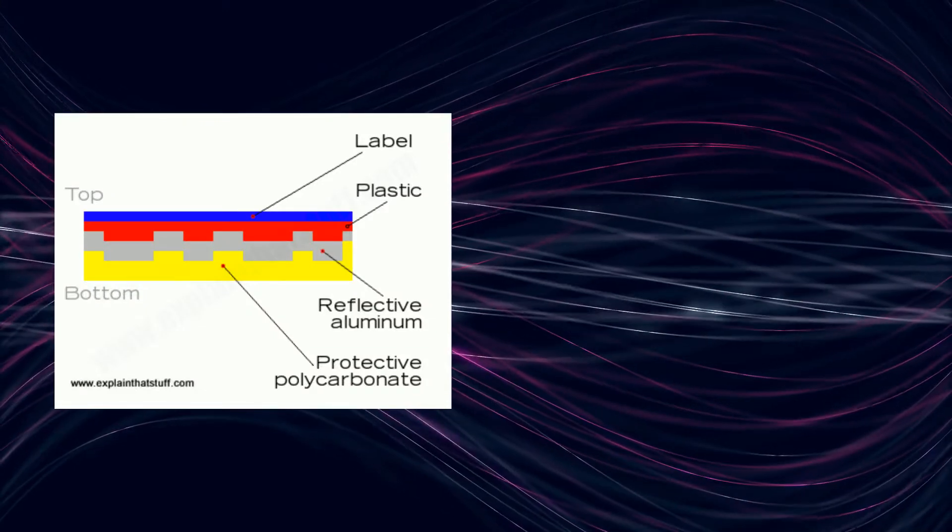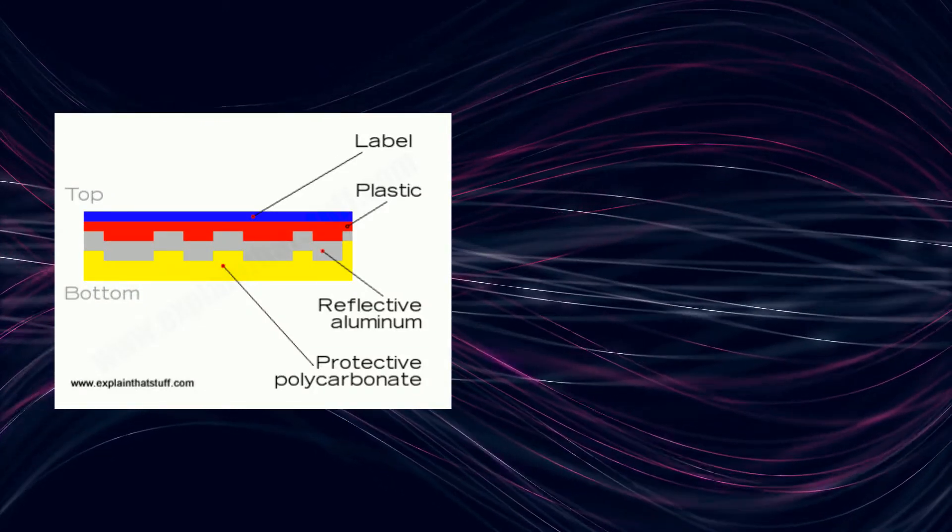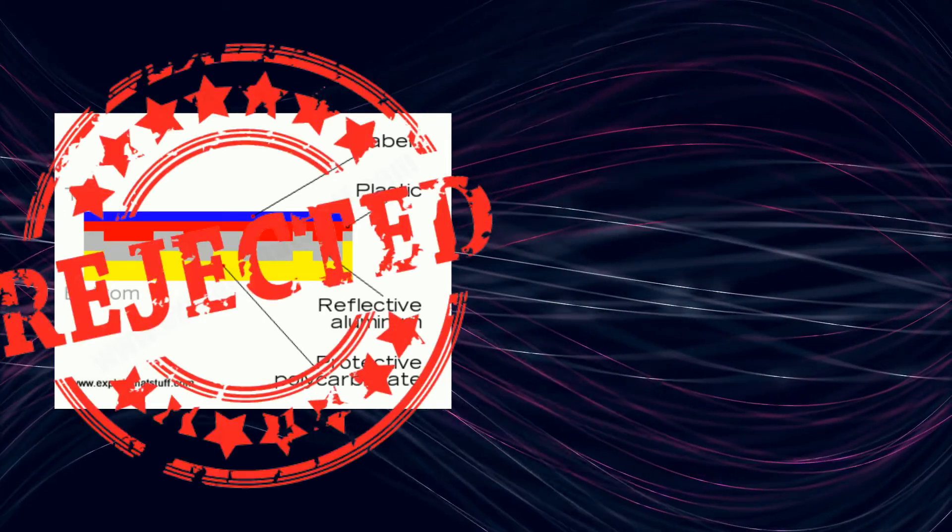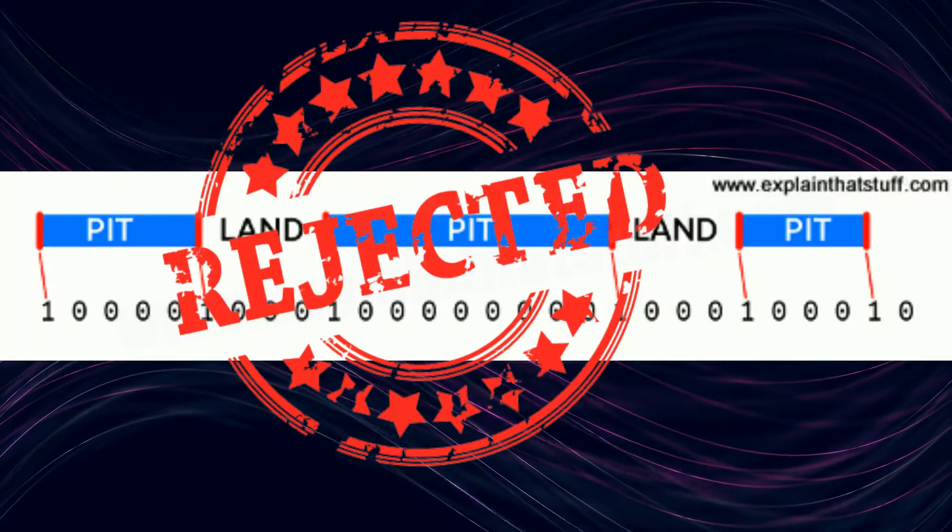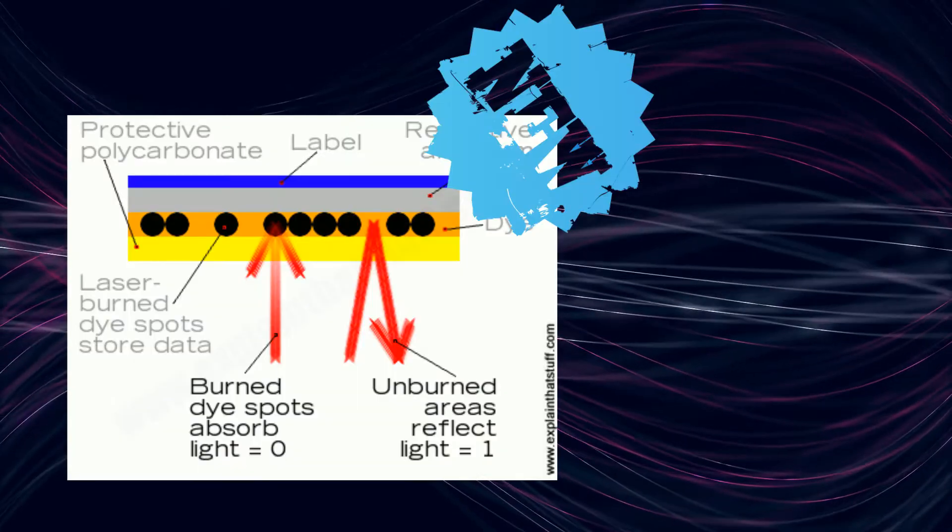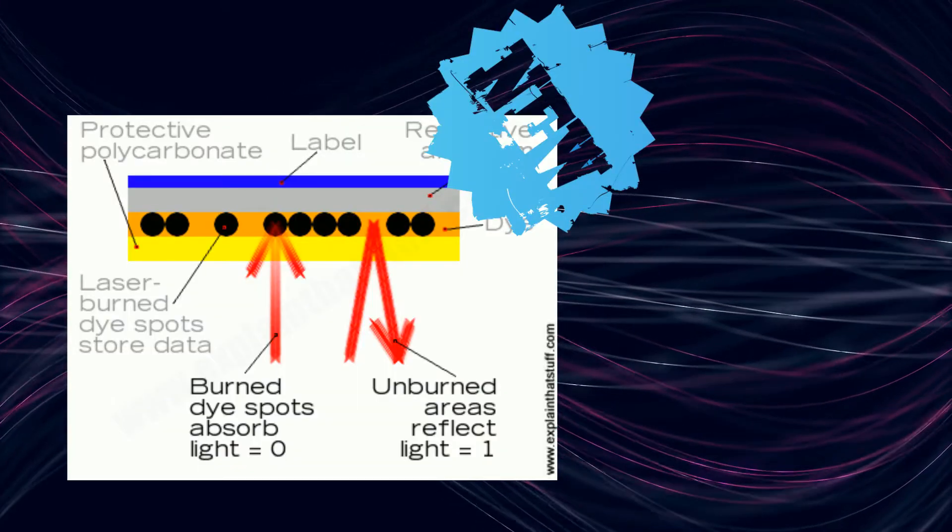So first let's see that CD-R, recordable CD. If we talk about the pits and bumps, if we use that technique we have to use a lot of CD press and this will be much more expensive, so it has a different technology in different ways. It has been used in pits and bumps and land.